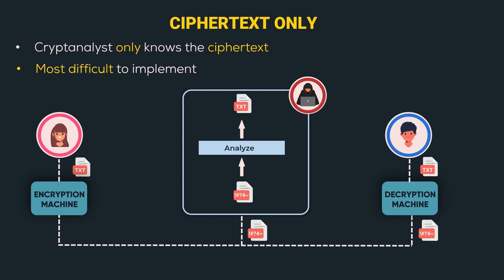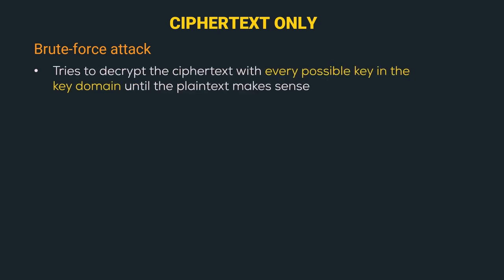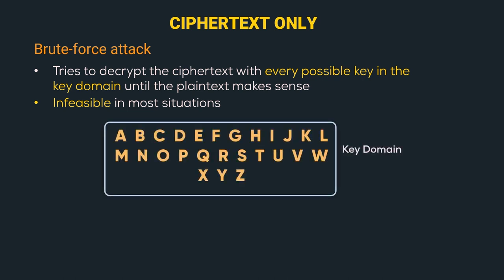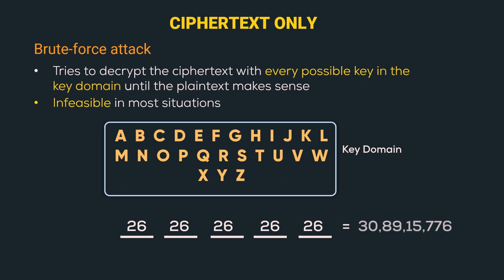Let's understand the techniques Oscar can use in the analyze function. The first is brute force attack — Oscar tries to decrypt the ciphertext with every possible key in the key domain until the plaintext makes sense. However, this solution is infeasible in most situations. For example, if the key domain is capital English letters A to Z and the key contains 5 letters, each letter has 26 possibilities, giving a humongous number greater than 30 crores. If we also include lowercase letters, special characters, and numbers, the key size becomes huge, making it very difficult to decipher such ciphers.